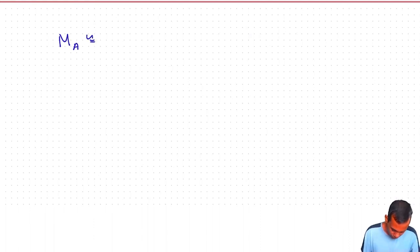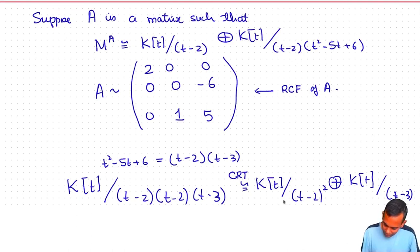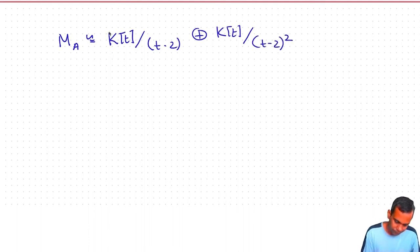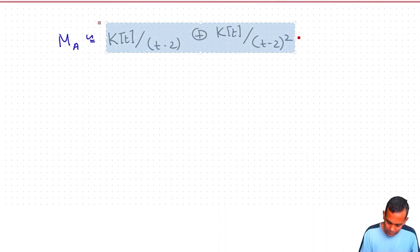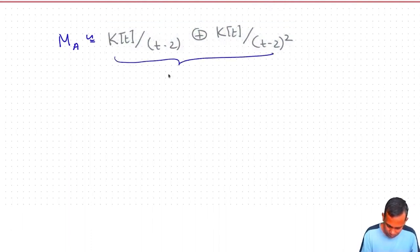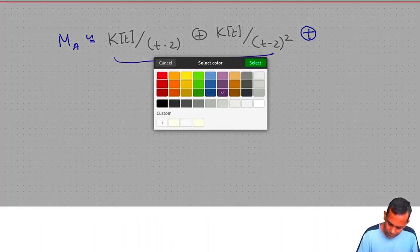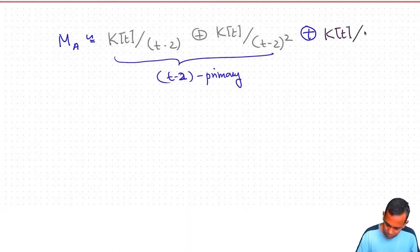Collecting all T−2 factors together and keeping T−3 factors separately, M_A is isomorphic to K[T]/(T−2) ⊕ K[T]/(T−2)² — this is the T−2 primary part — plus K[T]/(T−3), which is the T−3 primary part.